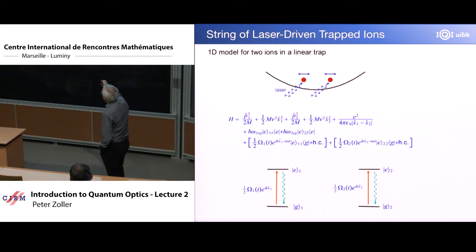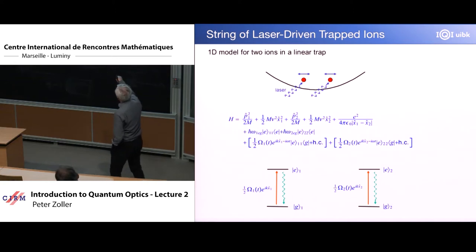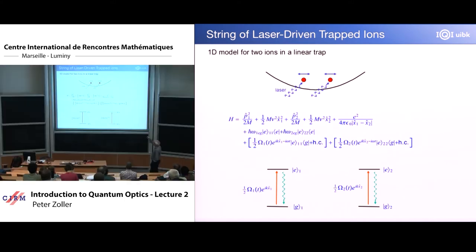When I have a Rabi frequency addressing my first ion, it would be omega_1, maybe time dependent, e to the iKX — this is the kick on ion number one, and then the coupling from the ground to the excited state. So the laser that we shine lifts the electron from the ground to the excited state of the first ion. Similarly for the second ion, this then kicking the second ion. I'm writing now twice what we wrote before — so you understand all of these things in detail.